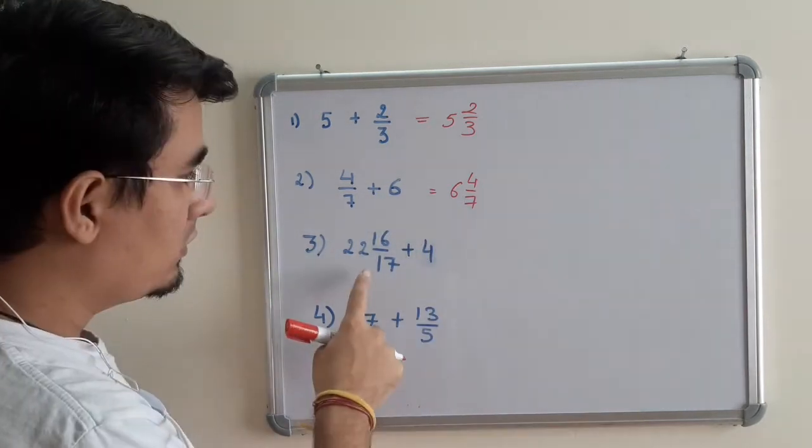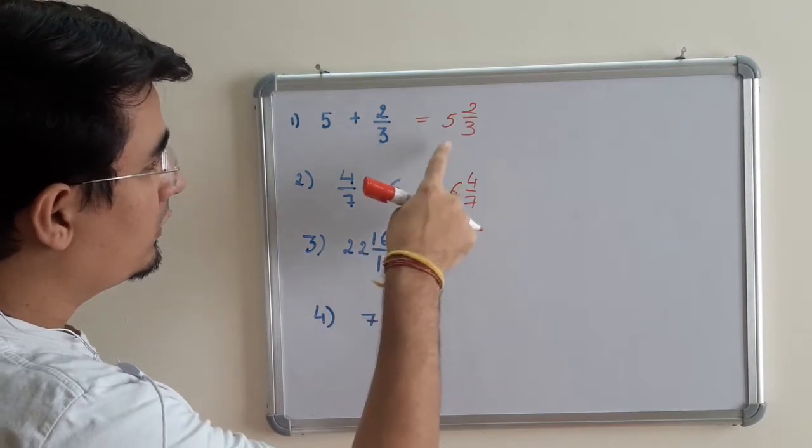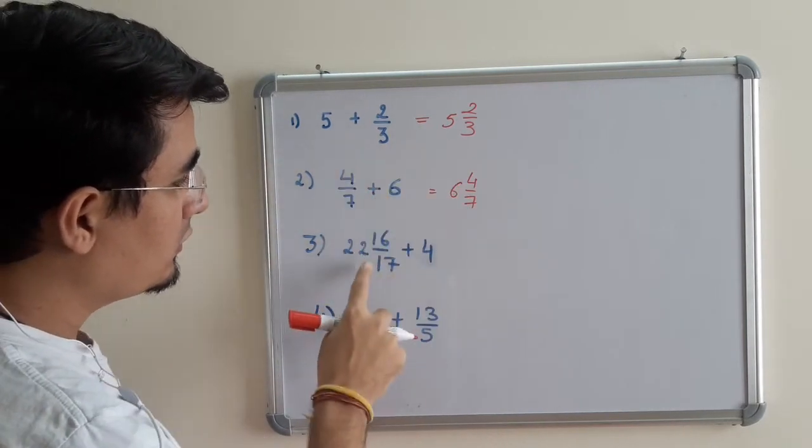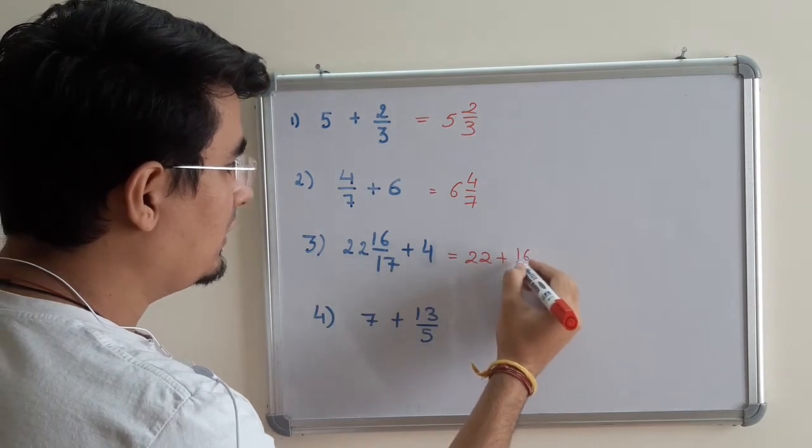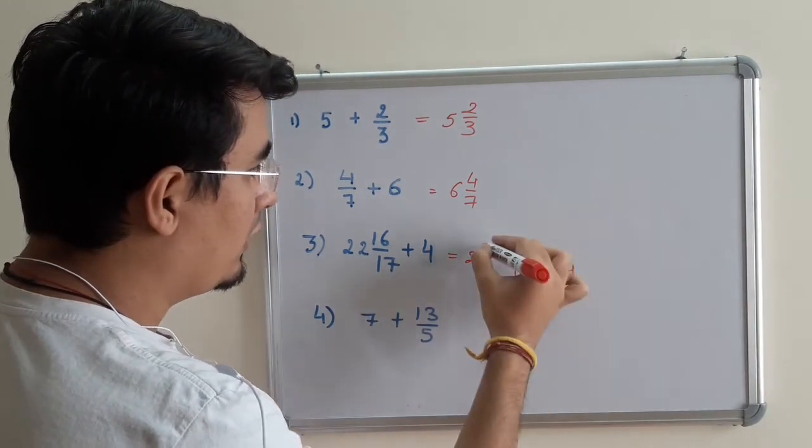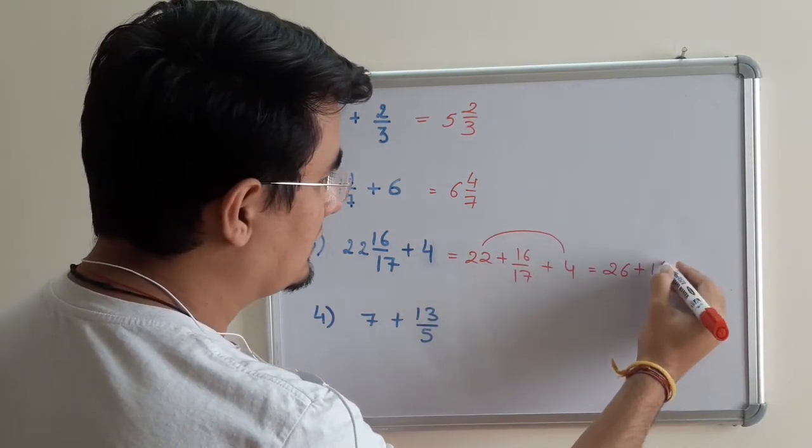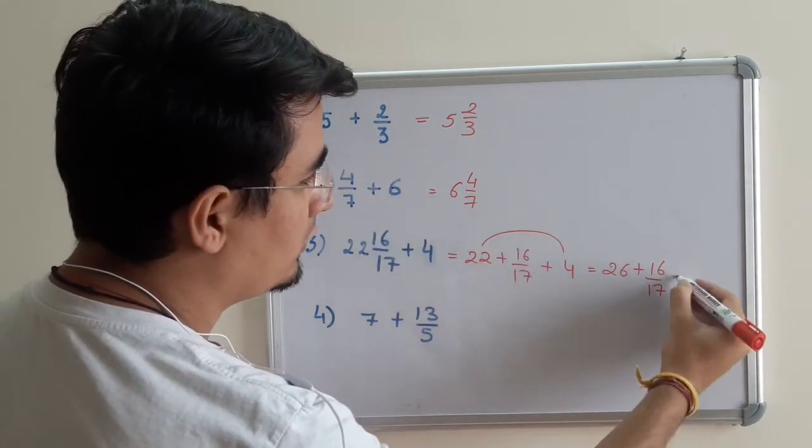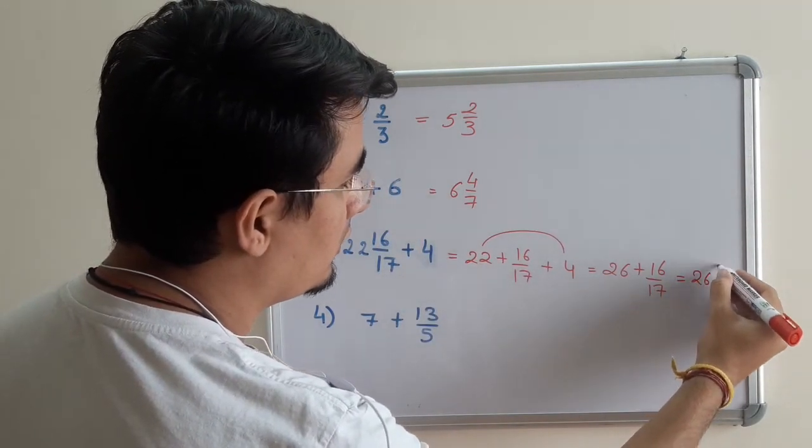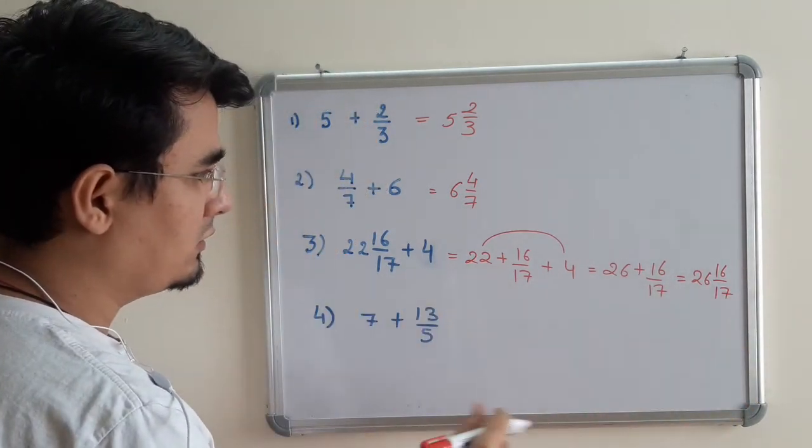In this case, this is a mixed fraction and I can do the reverse of it. I can write this as 22 + 16/17 + 4 and add these two numbers. I will be getting 26 + 16/17, and this is the same as the first one. The answer is 26 16/17 without taking any LCM whatsoever.